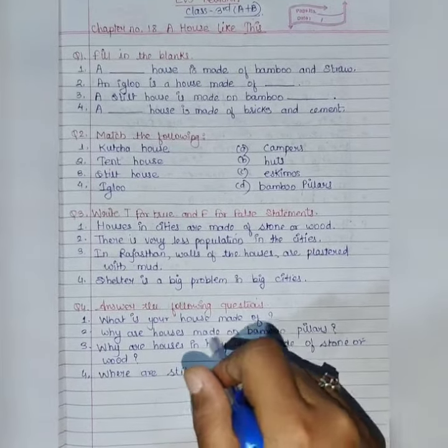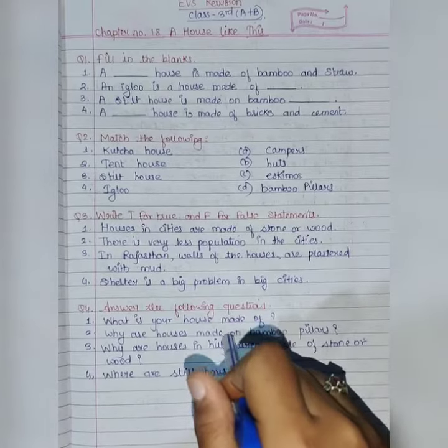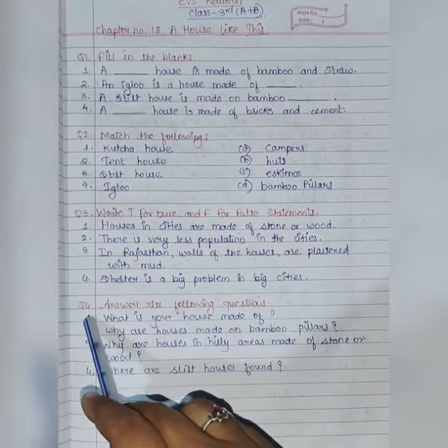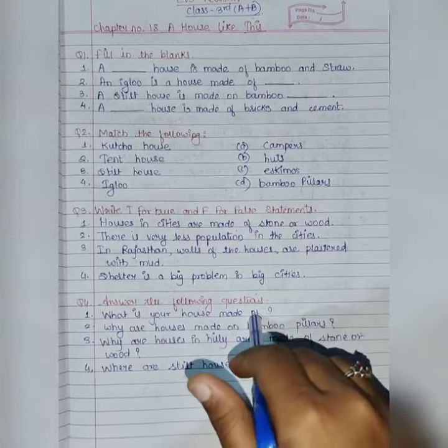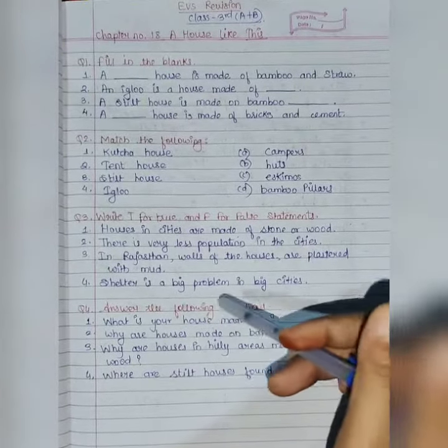You have to revise and learn the questions and do the writing practice at your home. First we discuss the first question: what is your house made up of? Aapka jo house hai wo kin kin cheezo se bana hai.